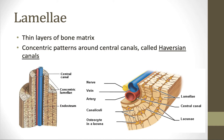Lamellae are thin layers of bone matrix. You can see here they're in little thin layers — one, two, three, and then four. These are concentric patterns that go around central canals called Haversian canals. Here's a Haversian canal, and you can see it's circles within circles — concentric lamellae going around a central canal. You do have different types of lamellae, and bone will be used to fill in the gaps, but we're going to focus on the concentric lamellae in this screencast.